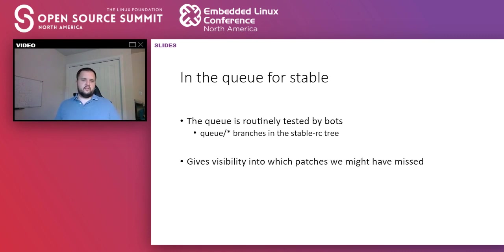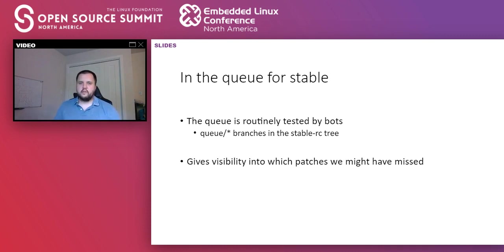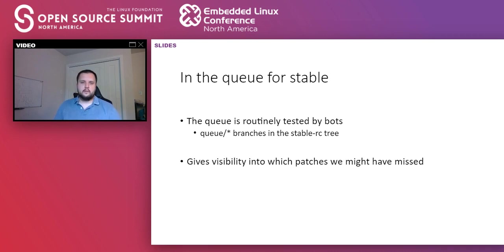Once your patch makes it to the stable queue, this is very similar to Linux Next — it will be tested by a lot of bots. It receives the same quality of testing that Linux Next receives, with the tree generated very frequently. The scale of this queue is much smaller compared to Linux Next, so it's actually much easier for users to see if patches were missed or if a patch wasn't backported correctly. It's an easy way for folks to do a sanity check on our work.